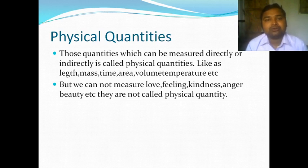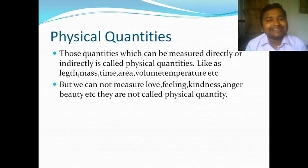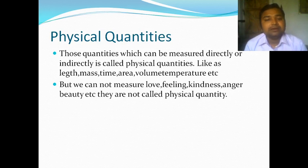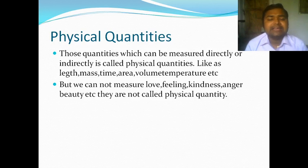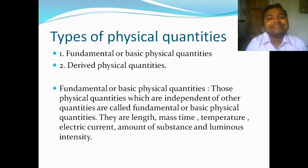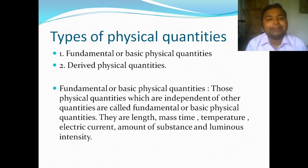Physical quantities are those quantities which can be measured directly or indirectly — that is called a physical quantity. Examples include length, mass, time, velocity, volume, and temperature. However, we cannot measure love, feeling, or kindness — those are not physical quantities.